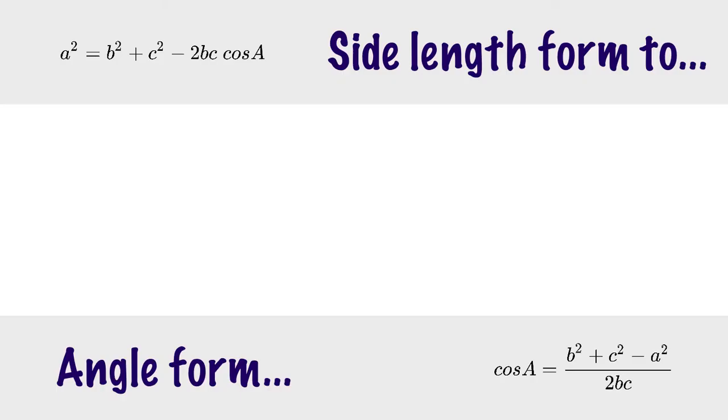There are two forms of the cosine law, one that you would use to find a side length, and one that you would use to find the cosine ratio and then convert it to its angle. I'm going to show you how to go from one to the other.